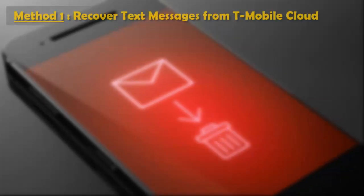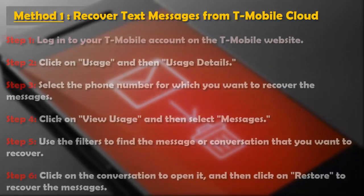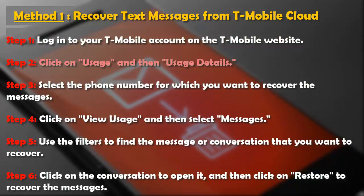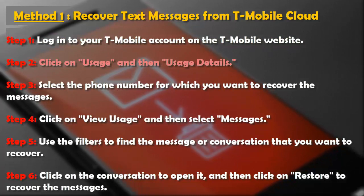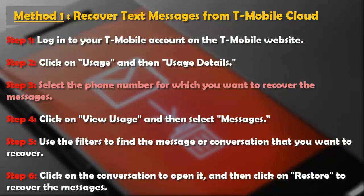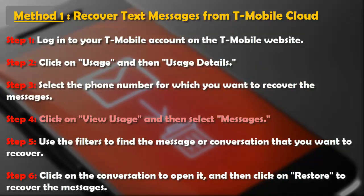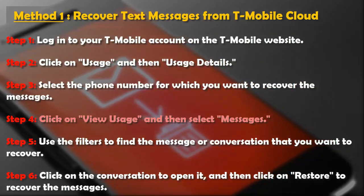Step 1: Log into your T-Mobile account on the T-Mobile website. Step 2: Click on Usage and then Usage Details. Step 3: Select the phone number for which you want to recover the messages. Step 4: Click on View Usage and then Select Messages.